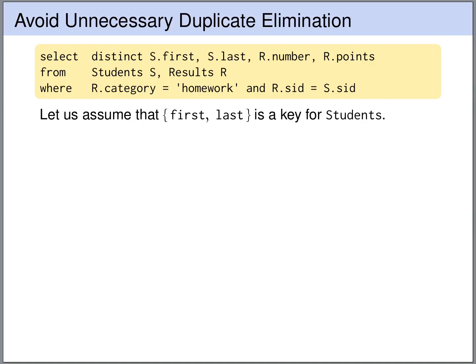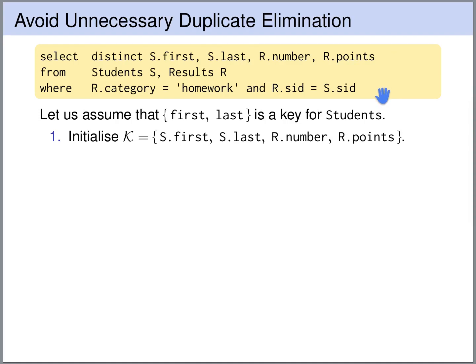Let's look at an example and see this algorithm in action. We apply the algorithm to the query shown. For simplicity we assume that first name and last name together form a key for the students table. We start with the set of attributes uniquely determined by the output — all attributes listed in the SELECT clause. In the WHERE clause we have an equation that R.category must equal the constant 'homework', so R.category is uniquely determined and we can add R.category to K.